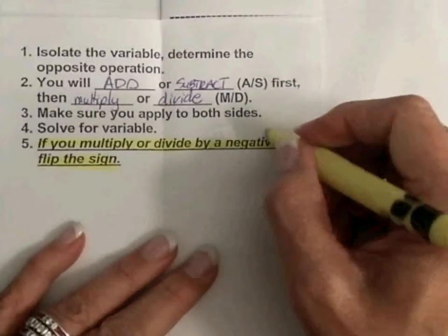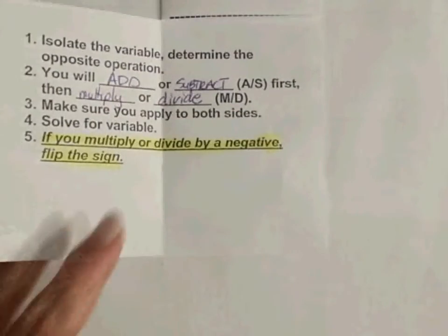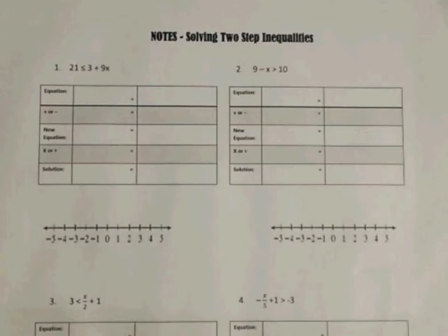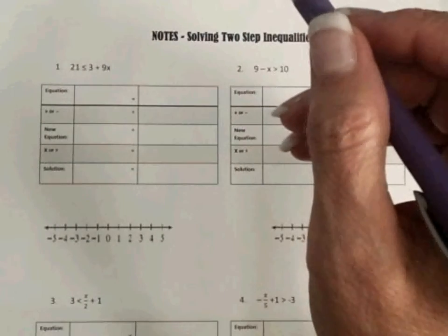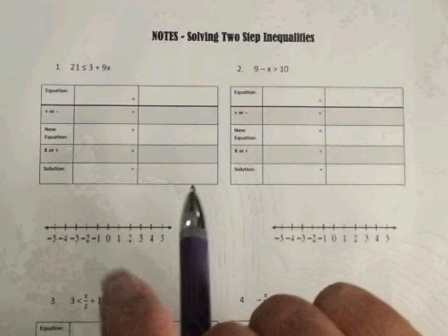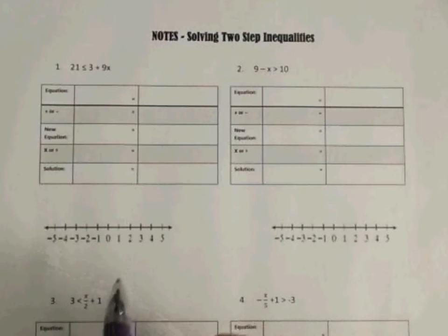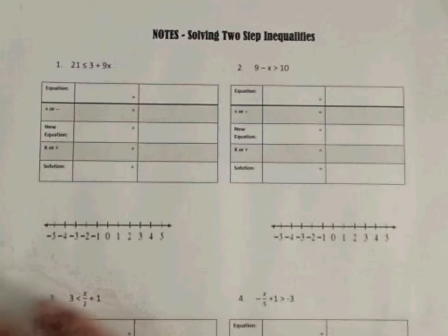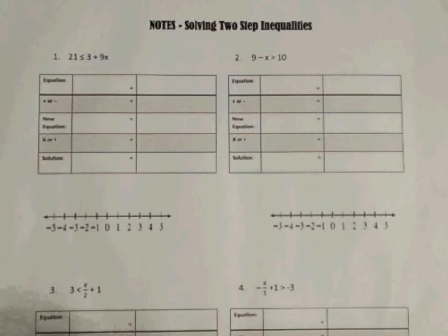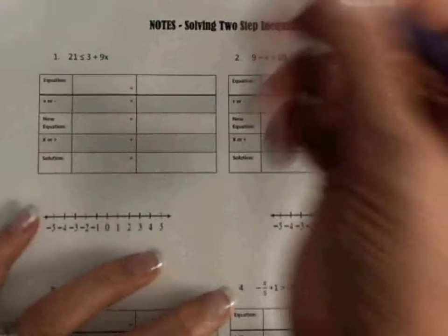So we're going to start with our examples. So our first inequality, you flip them. Okay, so it is 21 is less than or equal to 3 plus 9x. Ms. Nelson was just telling me that when she has the x on the right-hand side of the inequality, she goes ahead and flips it before she starts. I usually do that at the end. It doesn't matter which way you do it. You can do it before or you can do it at the end. So we'll try to show you some of both. So I'm going to write it just like it's written, and Ms. Nelson will show you how to flip it at the beginning. You still get the same answer.